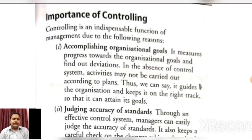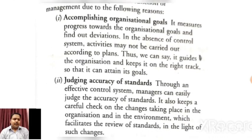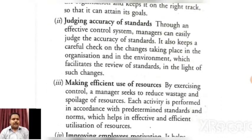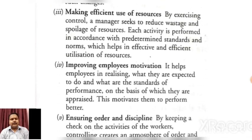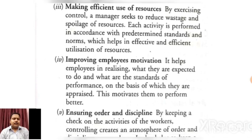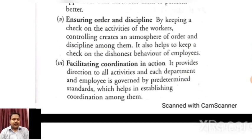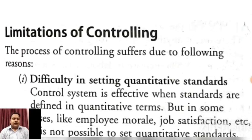Controlling helps to achieve our organizational goal. With the help of controlling we judge accuracy of standards, make efficient use of resources, improve employee motivation, ensure order and discipline, and facilitate coordination in action. In today's video we will move to the next topic of this chapter — that is the limitation of controlling.